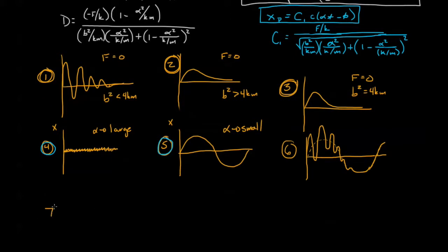We can call this scenario number 7. We have no damping, so we'll say B equals 0 and alpha equals omega naught. And what we see is something like this.